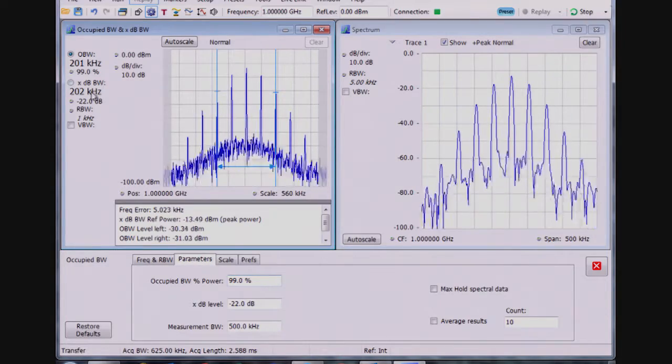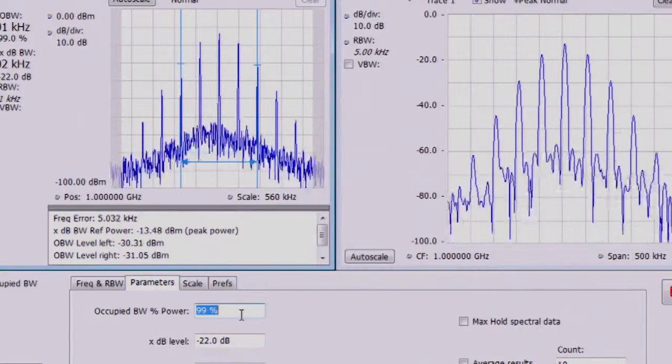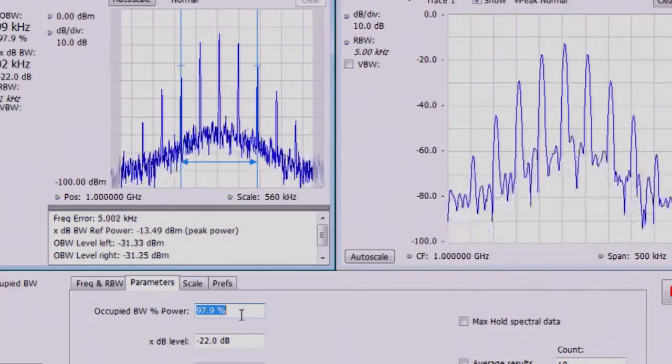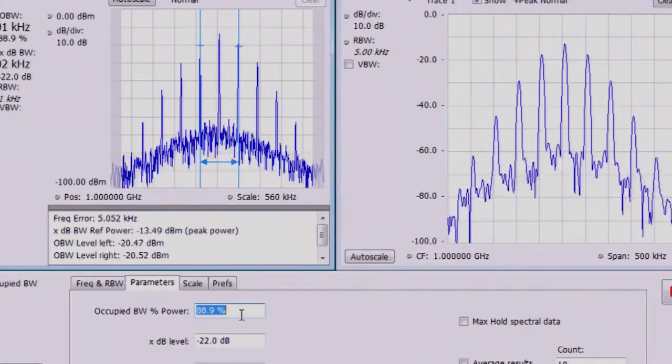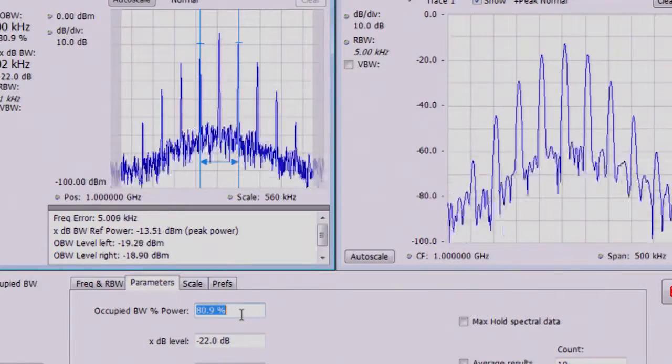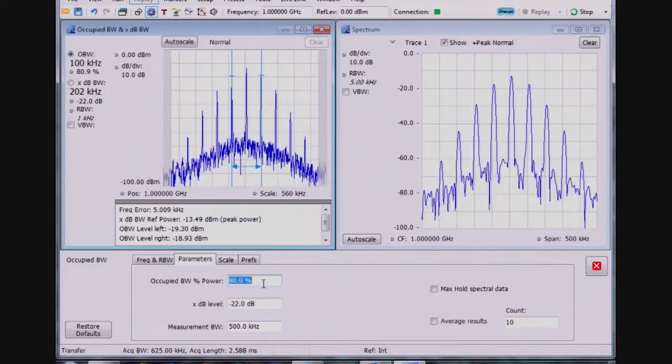So the parameters here, I have a 99% power occupied bandwidth level right now. And I can change that either in the settings, if I want to look at where is less than 90, like in this case, 80.9% of the power is contained in this, it looks like, 100 kilohertz bandwidth.